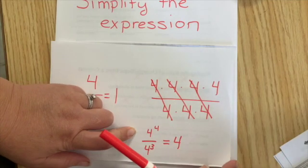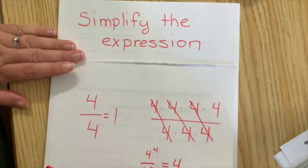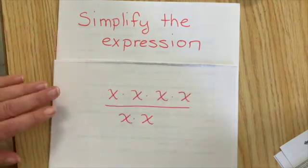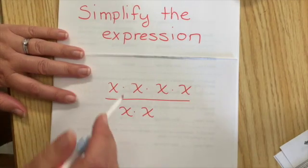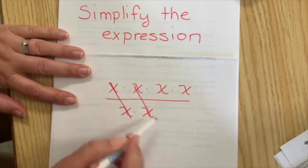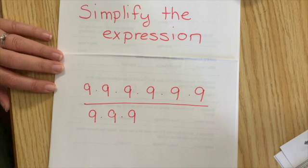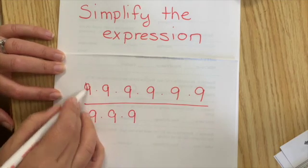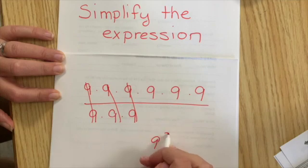So let's do that a couple times, and then we'll talk about what the quick rule would be. So can you cross those out and write what that would be? So we would cross out those. And what's left is x to the second power. Try this one. So we'll cross out the ones that equal one. What's left is nine to the third power.